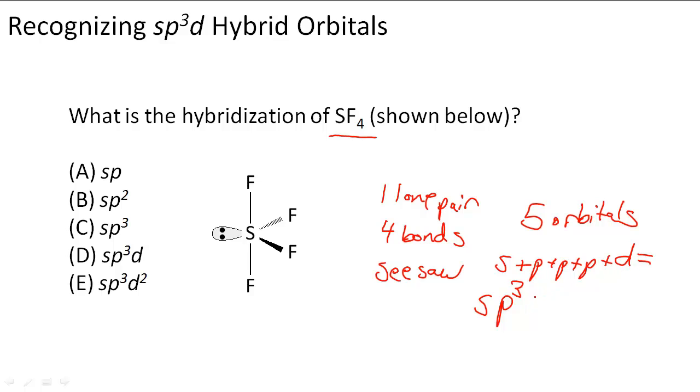And so when we combine them, we have SP3D orbitals combining together in this seesaw shape because it has five orbitals.